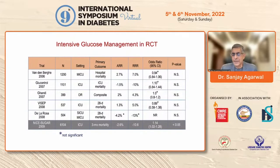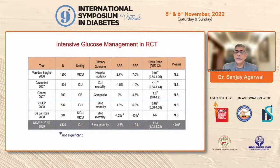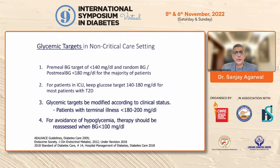The NICE-SUGAR study settled the issue by showing no clear benefit in targeting 80–110 mg/dL. We now accept that most ICU patients should be kept between 140–180 mg/dL. The ACE guidelines had a caveat that post-surgical patients should target 80–110, but the subsequent GluCose Control in the ICU (GLUCONTROL/GluE) trial comparing 80–110 versus 140–180 found no clear difference, confirming that all patients should be kept between 140–180 mg/dL.